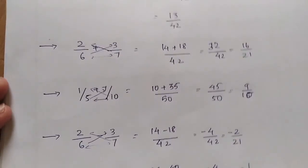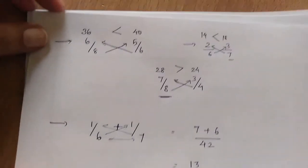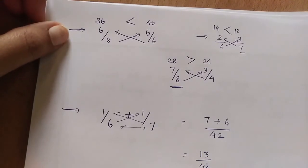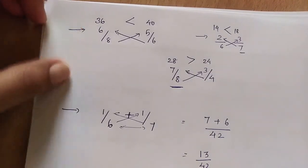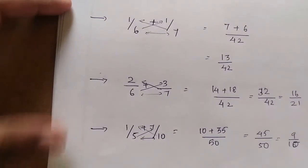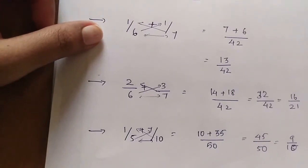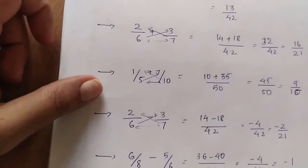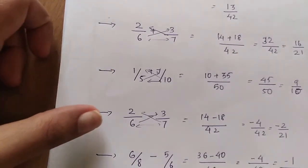These are some simple methods. First we discussed finding the largest rational number. Then how to add two rational numbers without finding LCM, which is the traditional method. And similarly subtraction also.